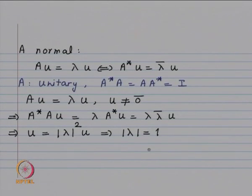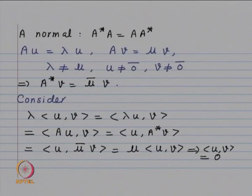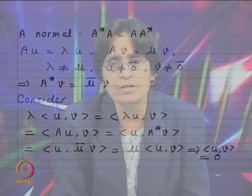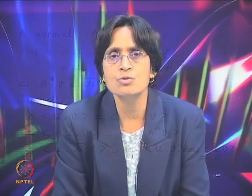Thus, for a unitary matrix, all eigenvalues lie on the unit circle. Now we look at the case of distinct eigenvalues for normal matrices.